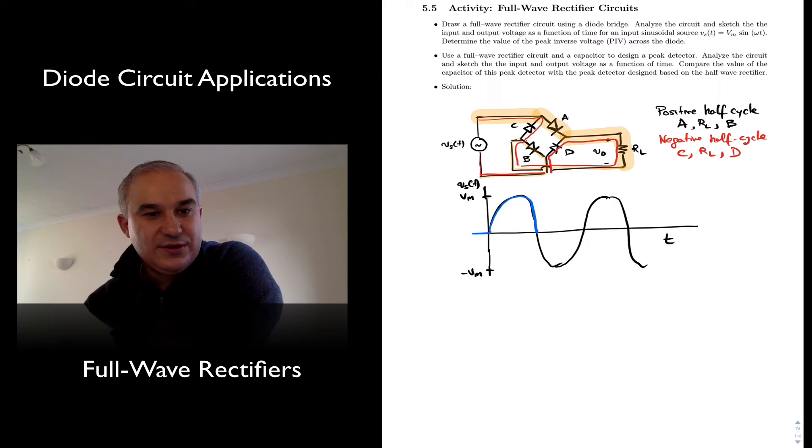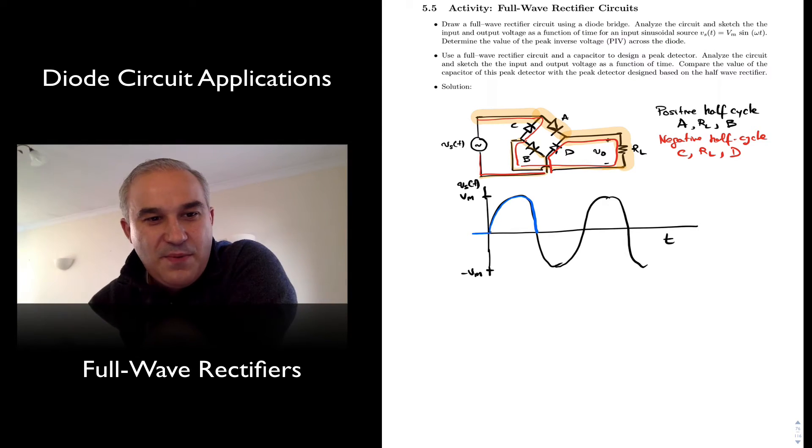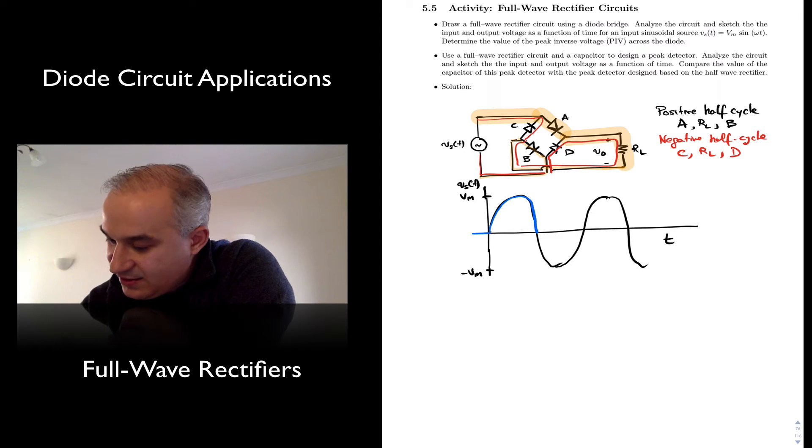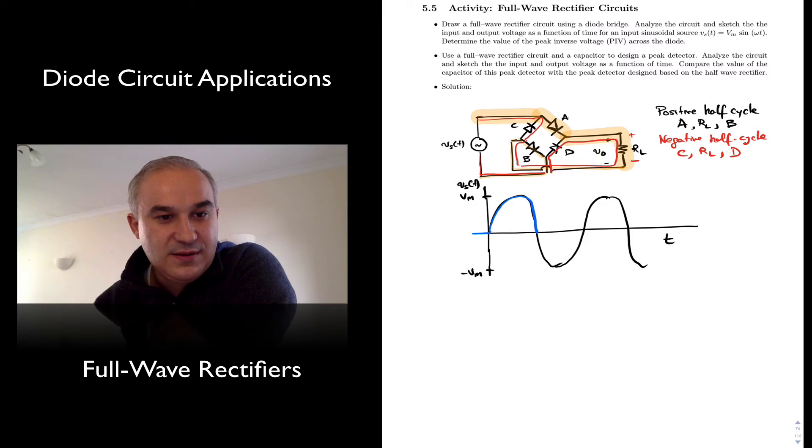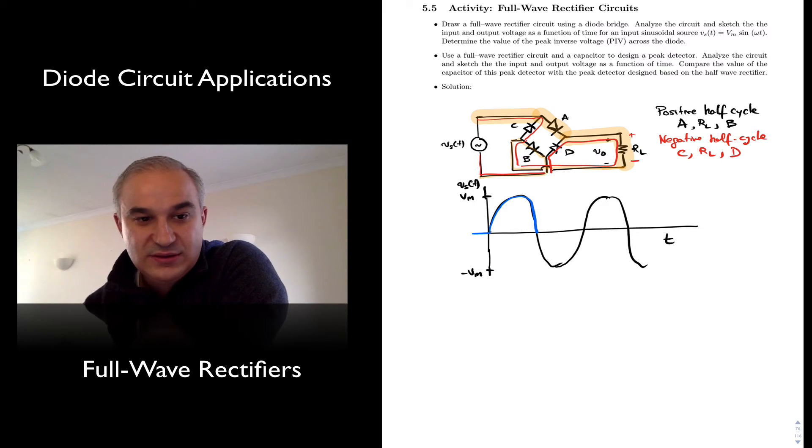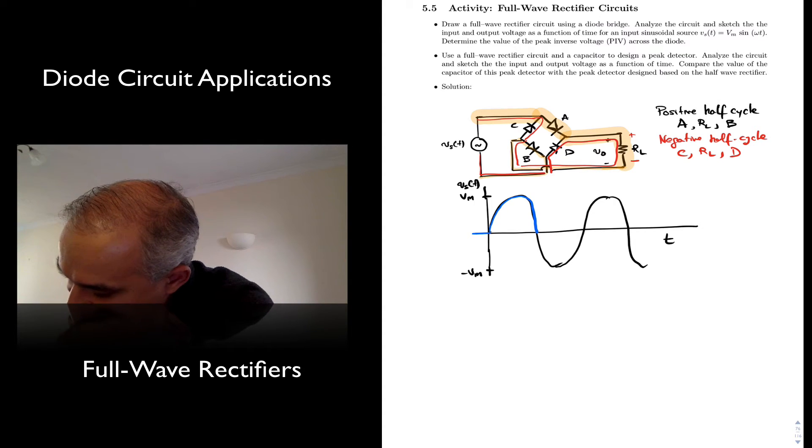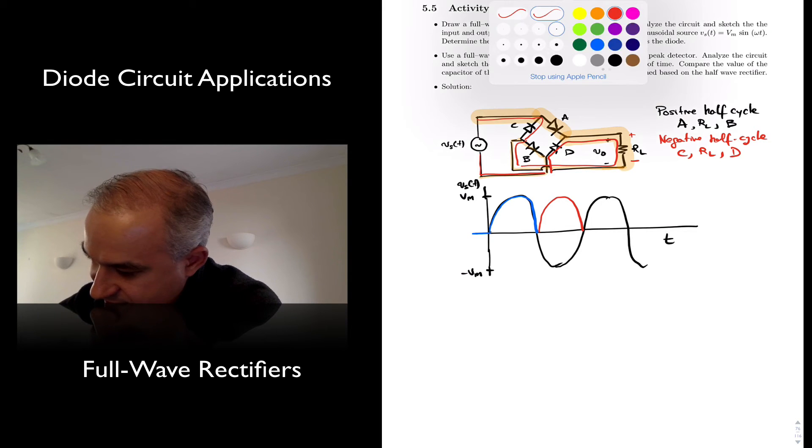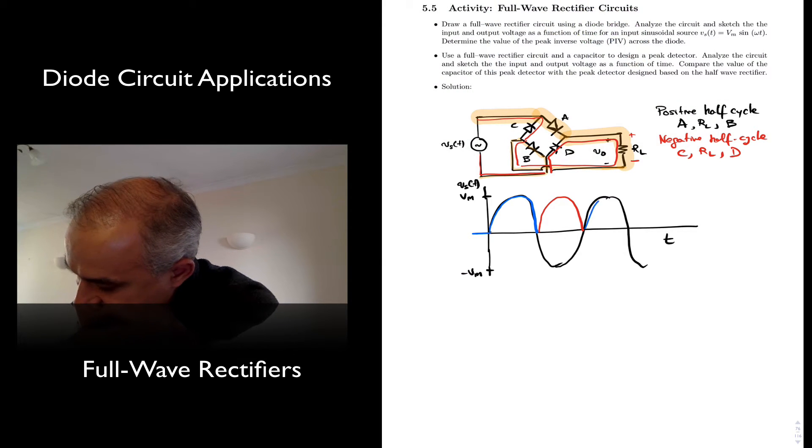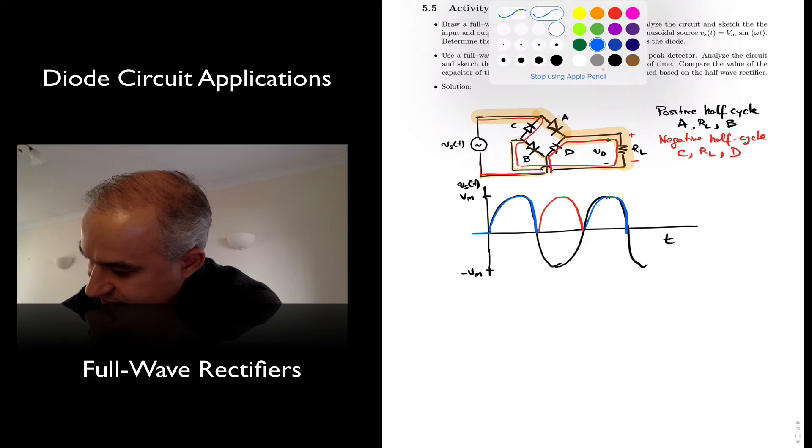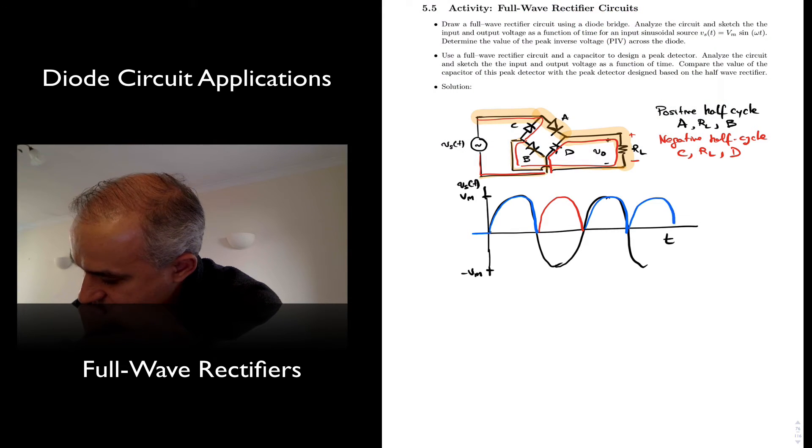So during both half cycles, current flows through RL from top to bottom. So the output voltage is always positive. Meaning we did that, and now it has this. And then during the negative, that's this. Positive, that's this.